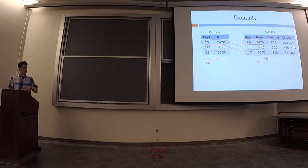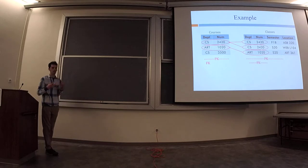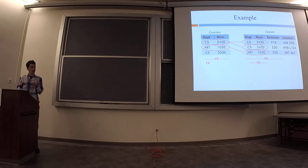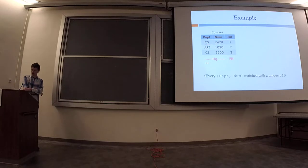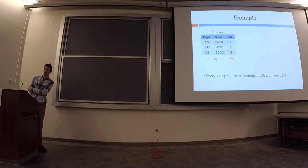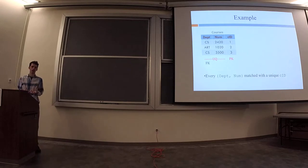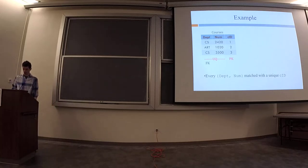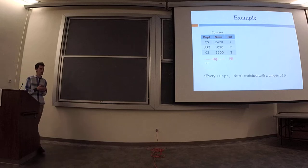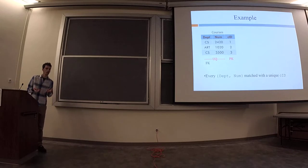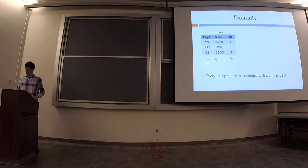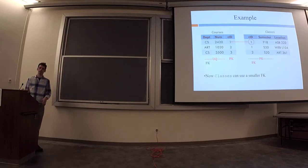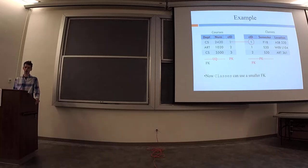The combination of department, number, plus semester identifies a class. Using that strategy, I'm going to take my two columns in courses, make them unique with UQ, add a new primary key that's a single column and an integer — call it CID. Now we know that every department-number combination is uniquely identified by one CID, so we can import CID into the other table instead of importing both columns.